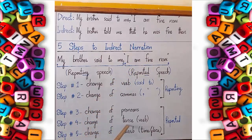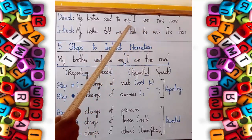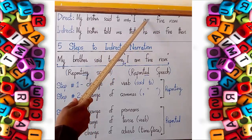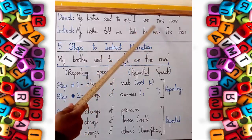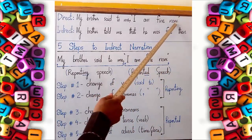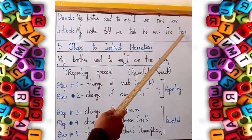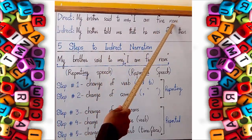The next change we make is change of tense. Here it says 'I am fine' — 'am' is used for present. In the indirect sentence, you can see 'am' has changed to 'was'. The last step in reported speech is change of adverb of time or place. For example, here we have 'now', and in the indirect sentence we have 'then'. So 'now' becomes 'then'.